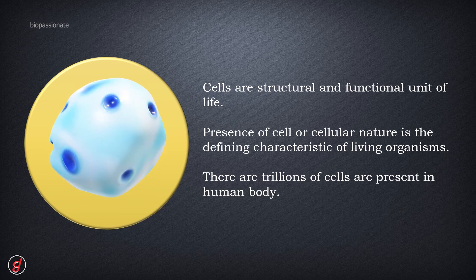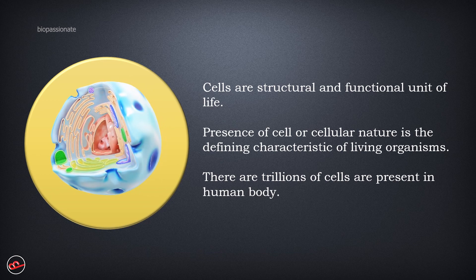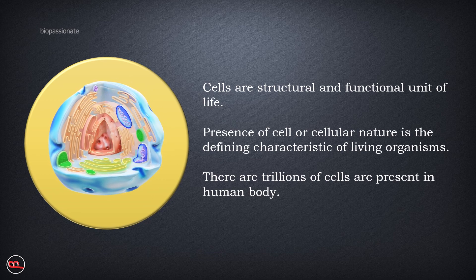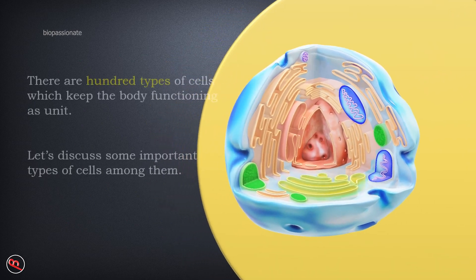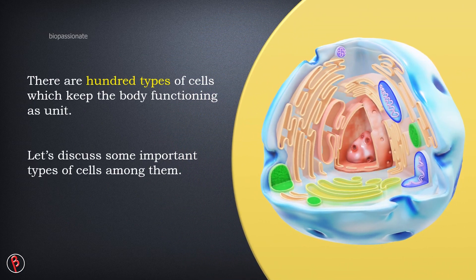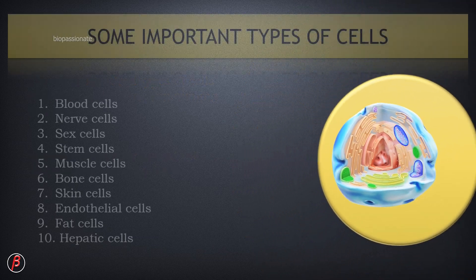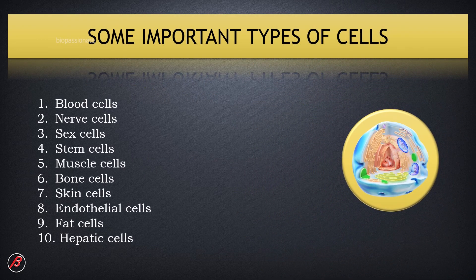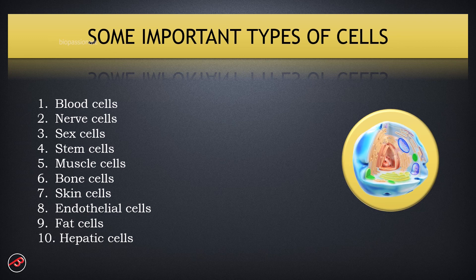There are trillions of cells present in the human body, but there are 100 types of cells which keep the body functioning as a unit. Let's discuss some important types of cells among them.